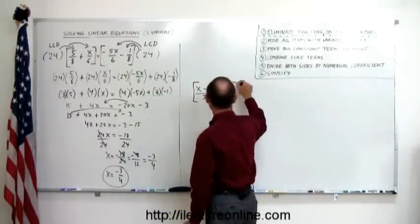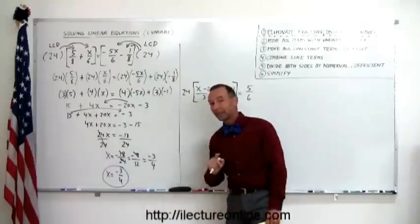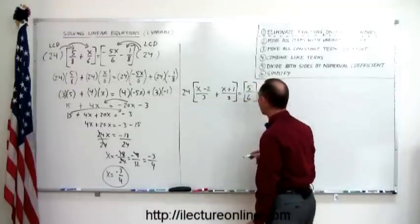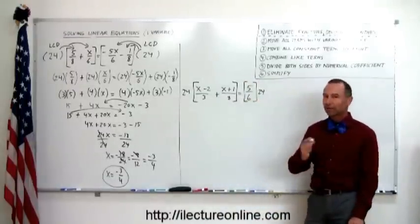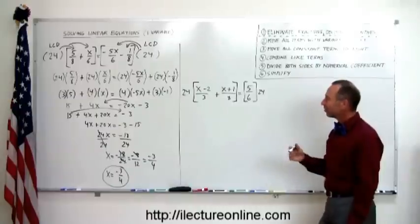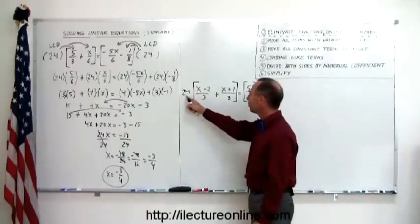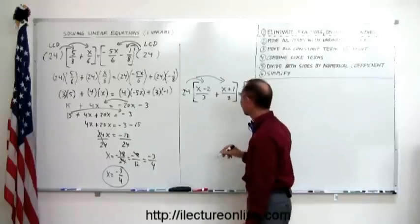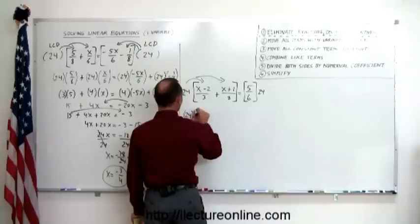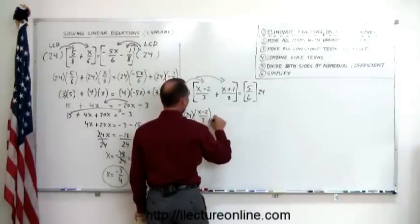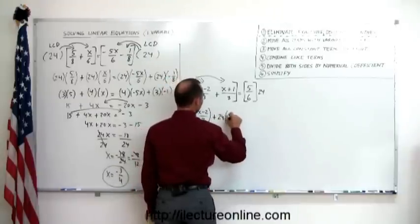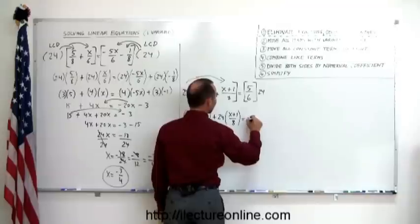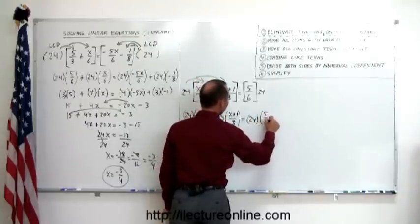So I'm going to multiply the left side by 24, and of course if I multiply the left side by 24, I must make sure I multiply the right side by 24 as well. We multiply both sides of the equation by the lowest common denominator, then distribute the 24 on each term inside the brackets. So this becomes 24 times x minus 2 over 3, plus 24 times x plus 1 over 8, and on the right side it becomes 24 times 5 over 6.